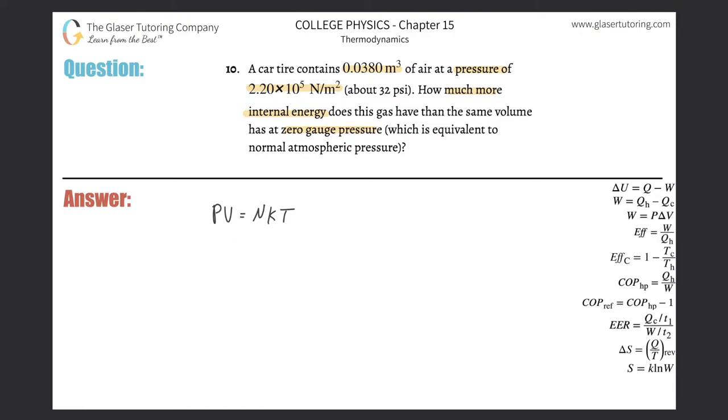And we also need the internal energy, the total energy in a gas, is equal to 3 over 2 times N K T. Now you might know the formula U is equal to 3 over 2 K T, and that's fine. This is for a monatomic gas.